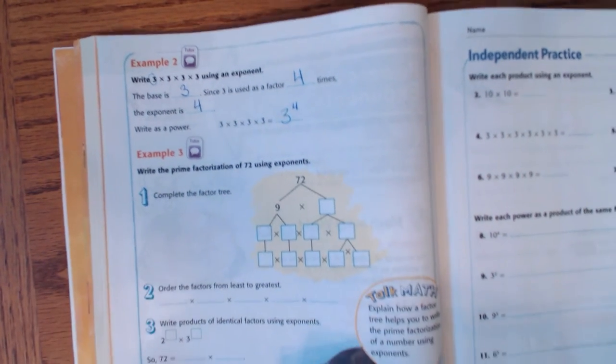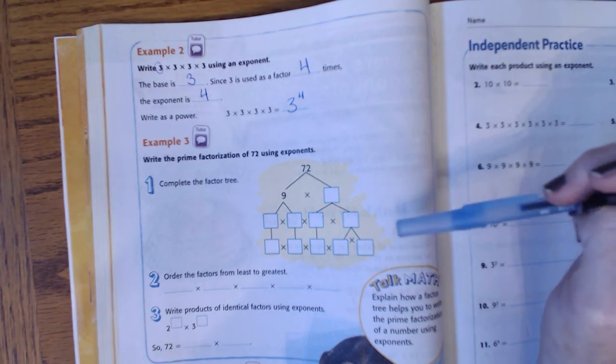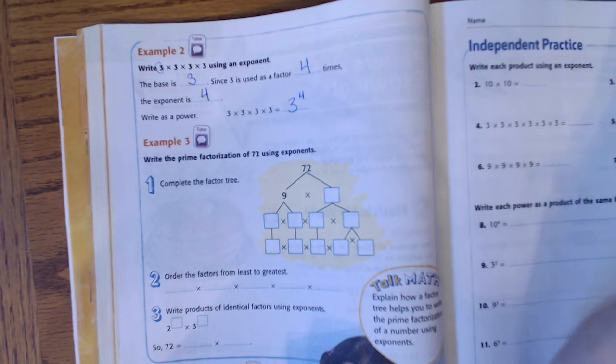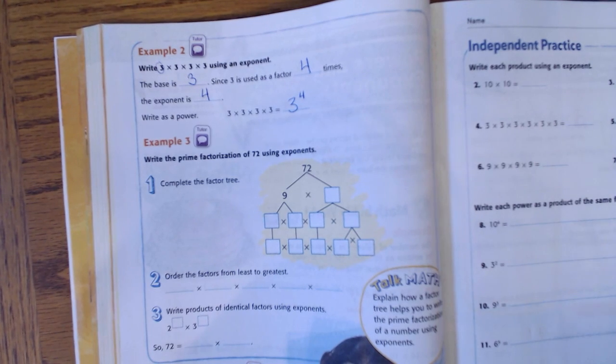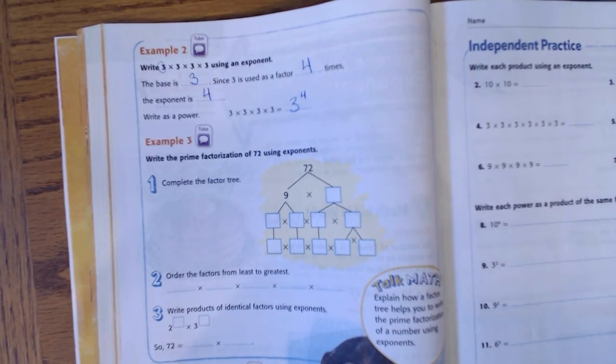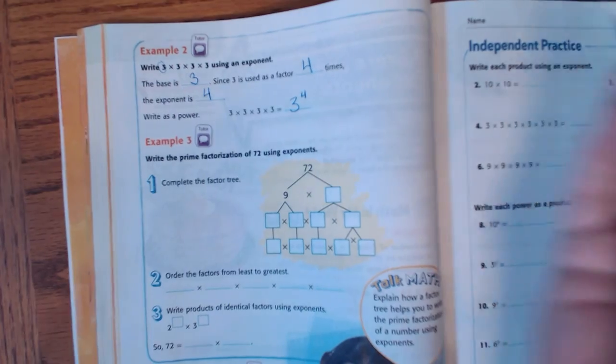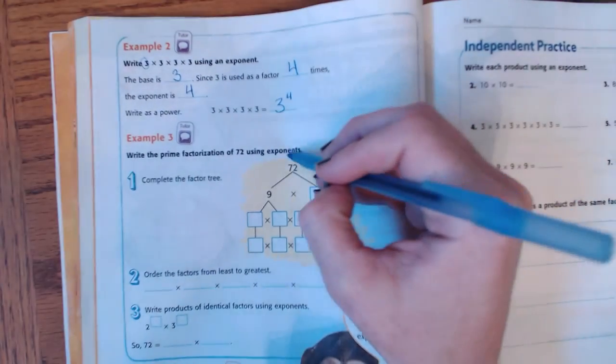Now, sometimes we use exponents when we're prime factorization and our factor trees. So, remember last time we had, like, two twos sitting next to each other would be two times two, or times three times three. You can make that a whole lot simpler by using exponents. So, let's break down 72.